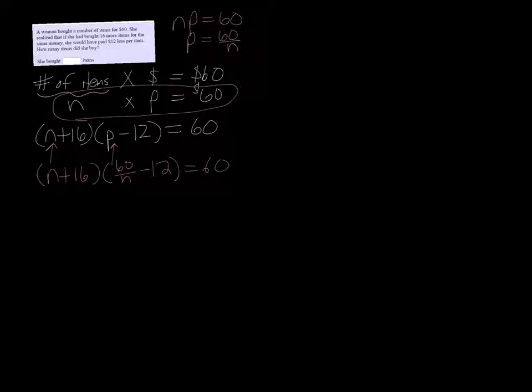So if I start foiling out the left side, N times 60 over N is just 60. 16 times 60 over N is 960 over N. N times negative 12 would be negative 12N. And we already did that, sorry, 16 times negative 12, I keep getting lost in this problem, is negative 192.